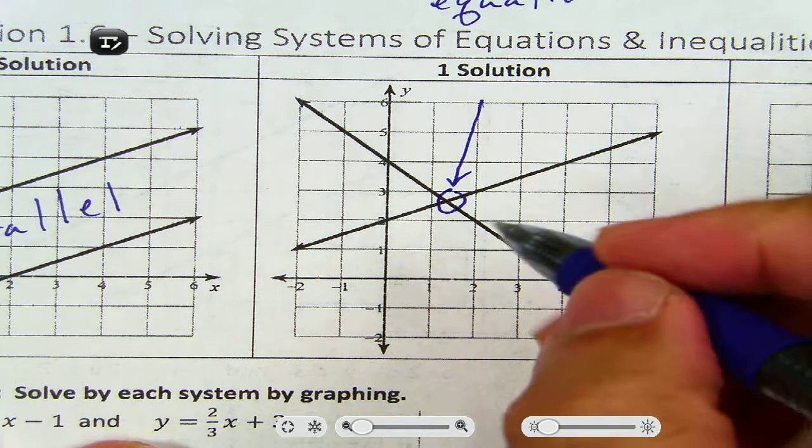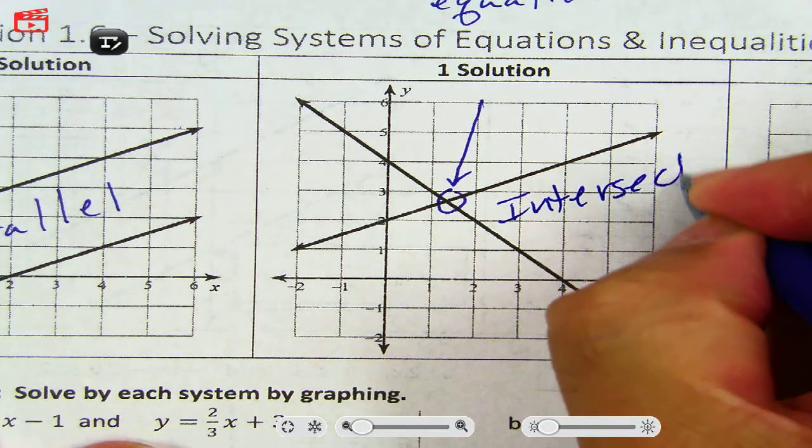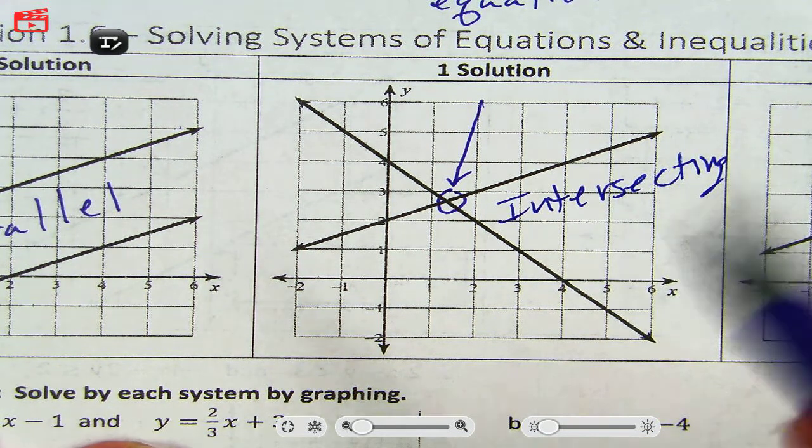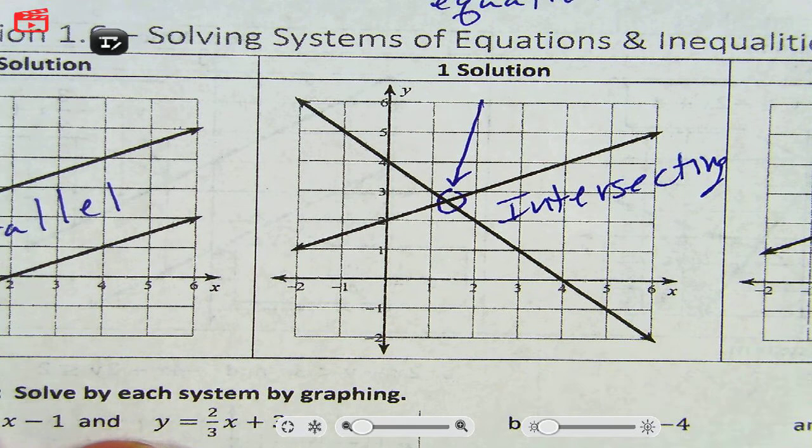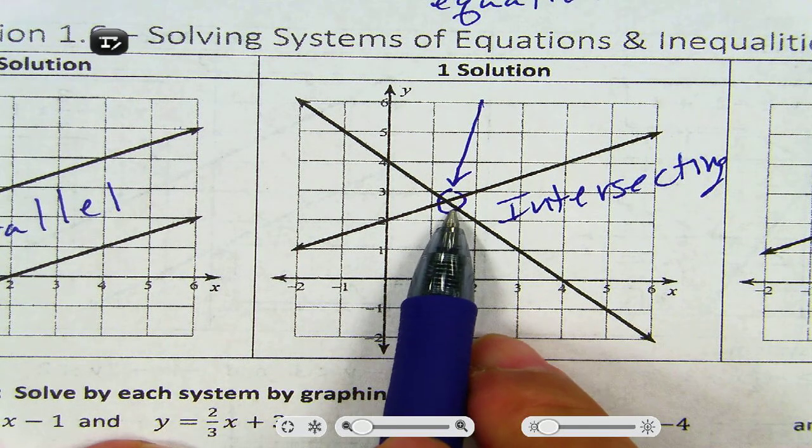So if you have intersecting lines, there is one solution. Can two lines intersect more than once? Or, I'm sorry, can two lines intersect twice? No. Two lines cannot intersect twice. Yes? So what's the answer? Okay. Whatever the coordinates are.